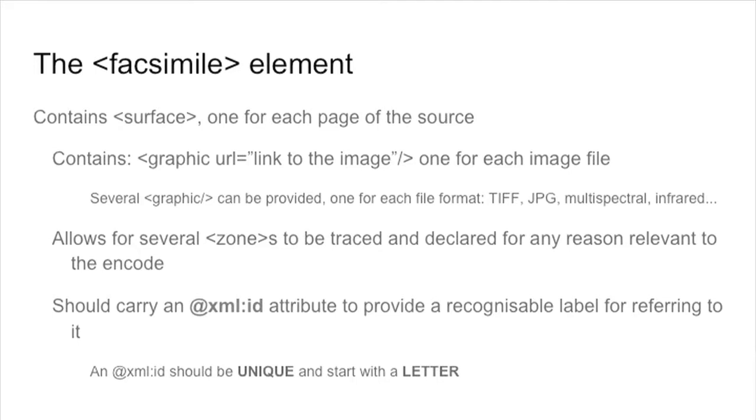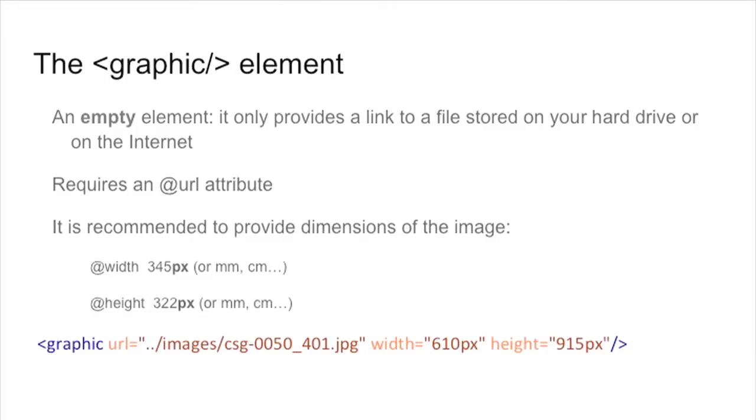Your surface should carry an attribute called XML:ID. It is a form of label, an identifier that you apply to any element when you need to be able to make a reference to it. Since we want to connect our surface and our image to the transcription, you definitely need to provide an XML:ID. Remember, XML:IDs are unique identifiers and they have to start with a letter, not with a number. The graphic element within the surface has a compulsory URL attribute. You can have several graphics within a surface — for instance, high resolution, low resolution, and ultraviolet images all together. It is good practice to also carry attributes giving the dimension in pixels, which helps ensure the right image is used during processing.